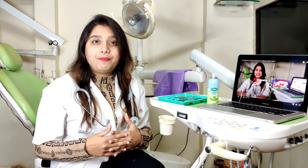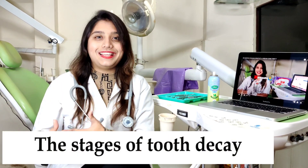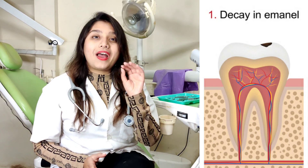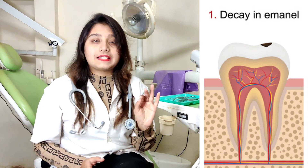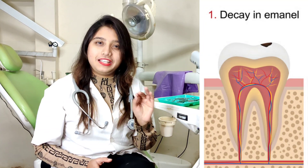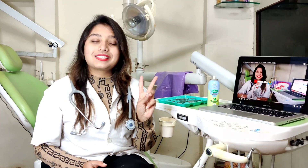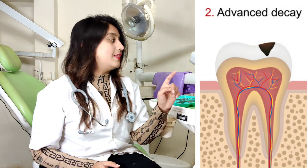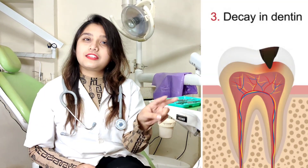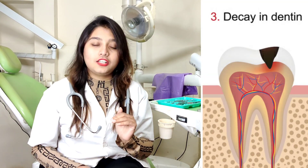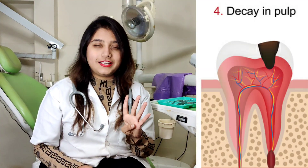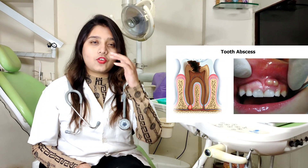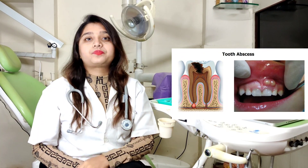Now I am going to talk about the stages of tooth decay. The first stage is white spots on the tooth surface leading into demineralization of the enamel. The second stage is enamel involvement. The third stage is dentine involvement. The fourth stage is pulpal involvement. And the fifth stage is abscess formation.